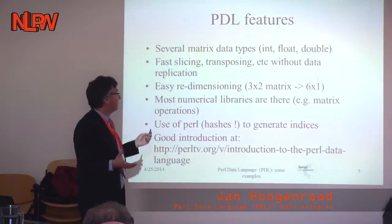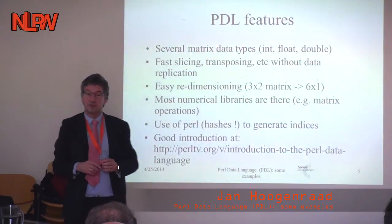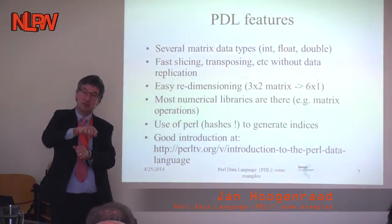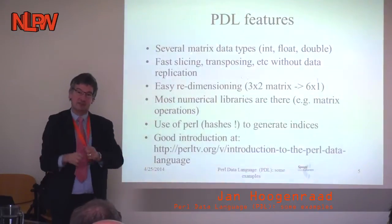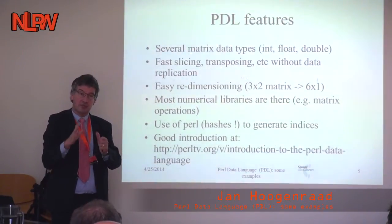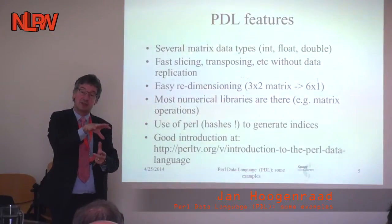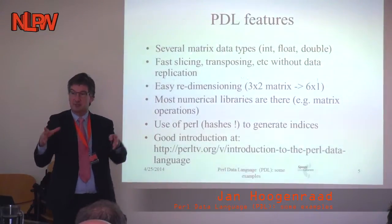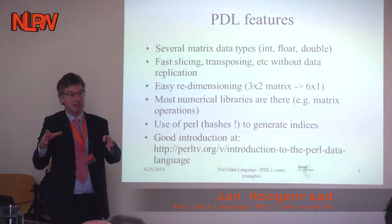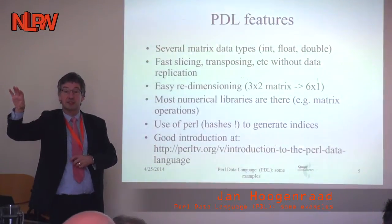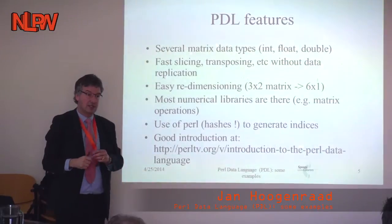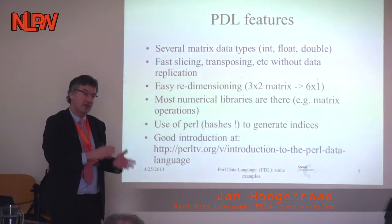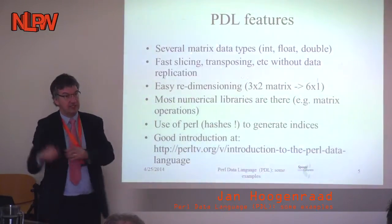What's very convenient about PDL is that taking parts of matrices or transposing — so making a two by three matrix into a three by two matrix — is all done by manipulating the administration around the data. So if I do a transpose in PDL, the basic six values stay in memory and it's just the administration about how it should be interpreted that is adjusted. That makes it very efficient in terms of memory for large matrices, because you don't copy data, and it's very rapid because only the administration is updated.